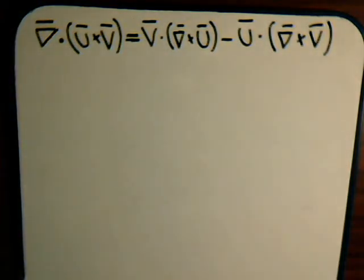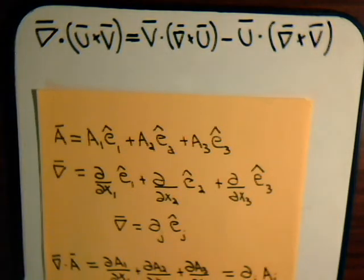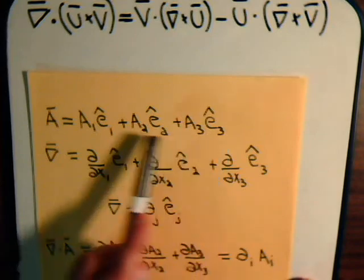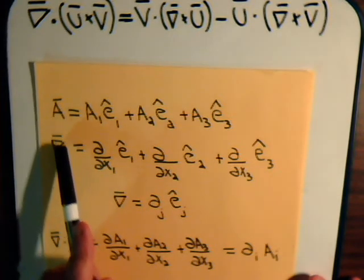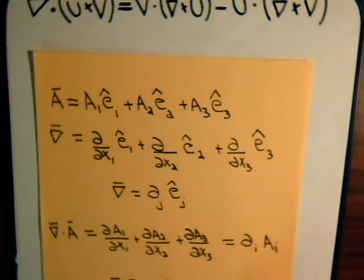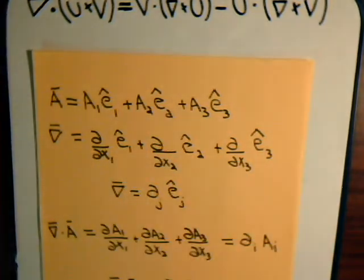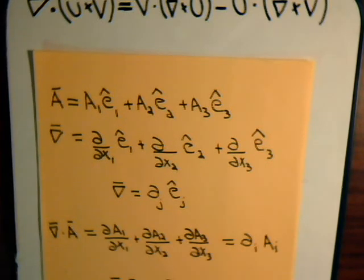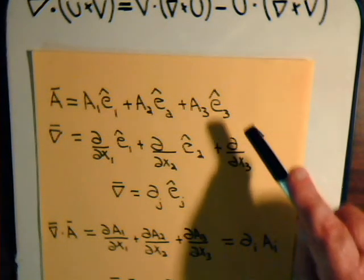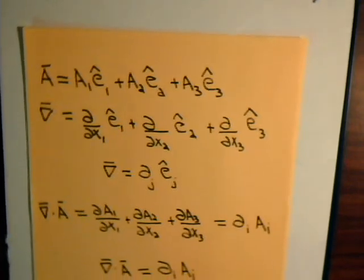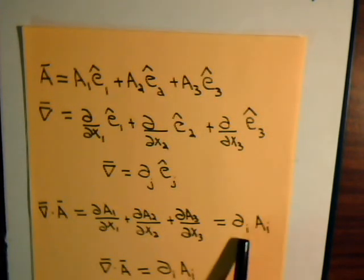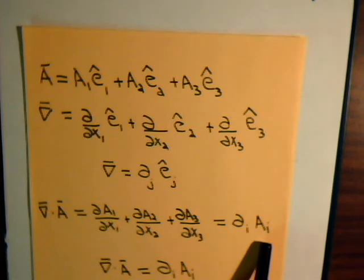Remember how it works for the divergence. Say we have a vector A expressed like this, and our del operator is expressed like this. Then if we take the dot product of del dot vector A, that will give us the partial of A1 with respect to x1, plus the partial of A2 with respect to x2, plus the partial of A3 with respect to x3. Or we can write this out abbreviated as partial i A i.